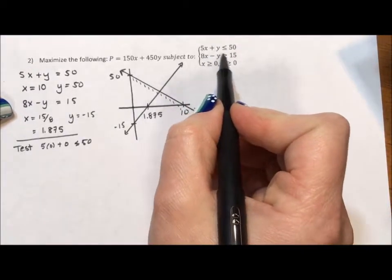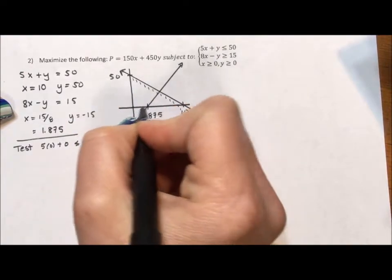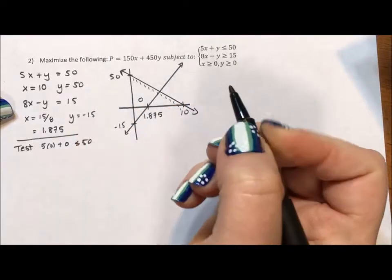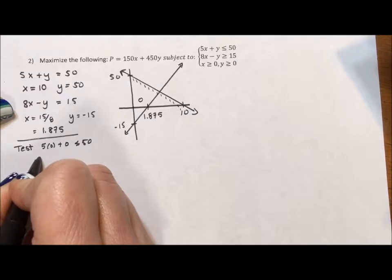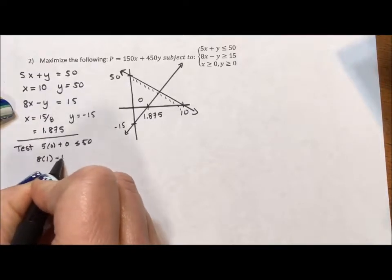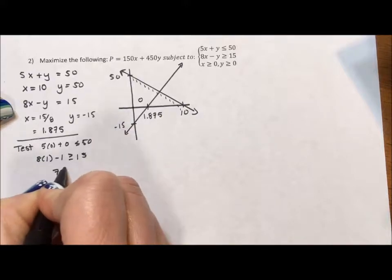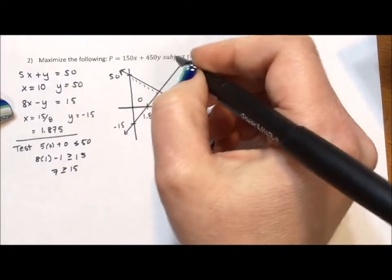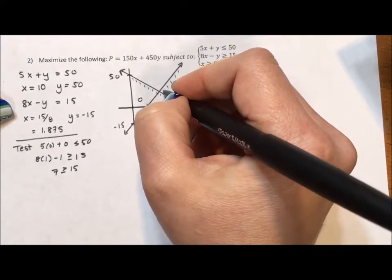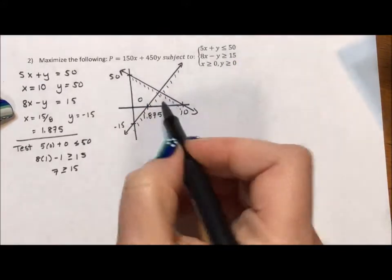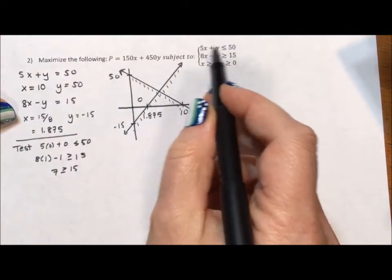If I looked at my second line, I'm going to test, instead of the origin, why don't I test 1, 1? If I test 1, 1, I would test, is 8 times 1 minus 1 greater than or equal to 15? Is 7 greater than or equal to 15? It isn't. Which means on this line, I'm going to shade away from that point. So I now have a part of the graph that's shaded according to these two lines.